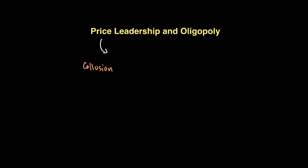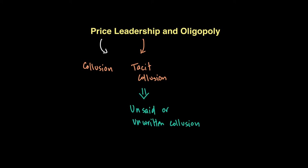Price leadership is a form of collusion that also takes place in an oligopoly. In price leadership, we look at what we call tacit collusion, which is an unsaid, unwritten kind of collusion that takes place between firms, and the goal is of course to maximize profits.